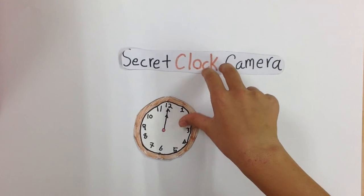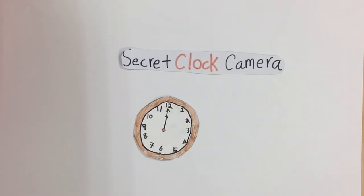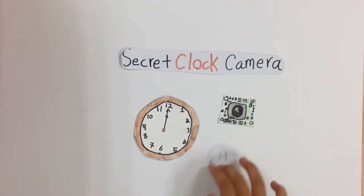Another tool is a secret clock camera. The clock looks like a usual wall clock, but a little tiny camera is inside the wall clock. The camera is about a half dollar coin.